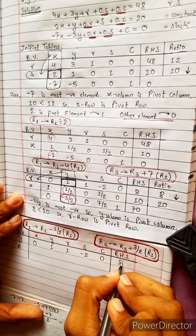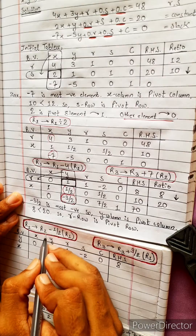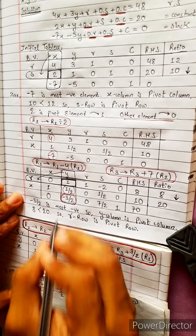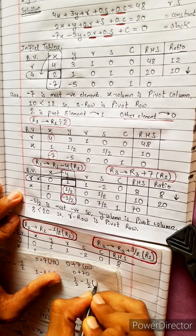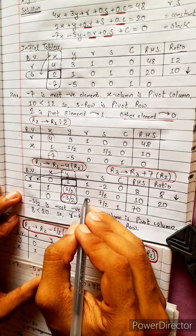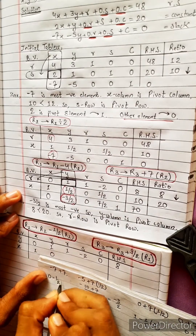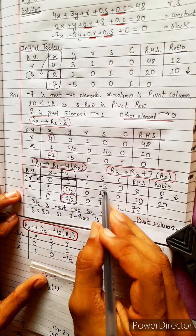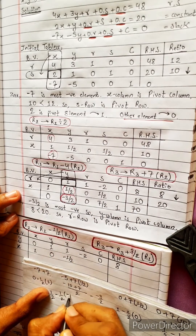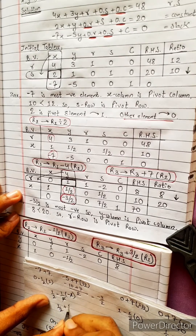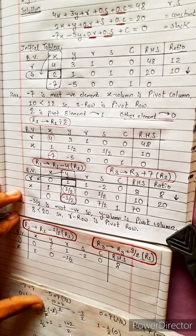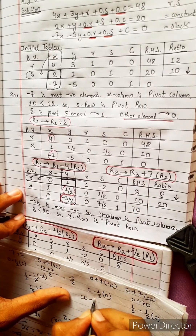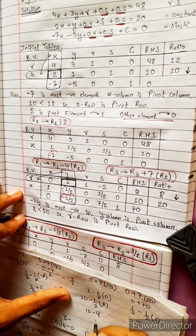1 minus 2 equals 0. 8: R2 minus 1 by 2 times R1. R2 minus 1 by 2 times R1: 1 minus 0 equals 1. R2: 1 by 2 minus 1 by 2 times R1 equals 1 minus 1 by 2 times R1. The 1 by 2 cancels plus 1. Then 2: 1 plus 2 equals 3 by 2. R2 minus 1 by 2 times R1: 10 minus 4 equals 6.